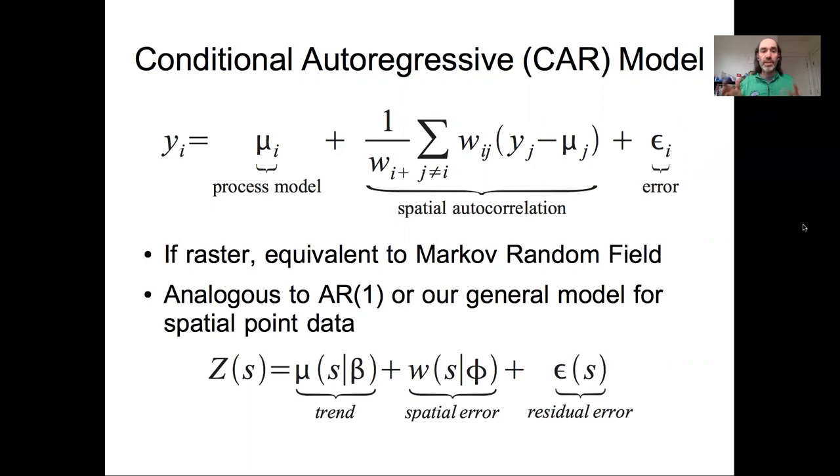In this video we're going to talk about how we build spatial models, basically how we take process models and build in spatial adjacency for block reference data into our process models. The framework we're going to take here is called the conditional autoregressive model or the CAR model, and it's a framework very analogous to what we did for AR1 time series model and our general model for spatial point data.